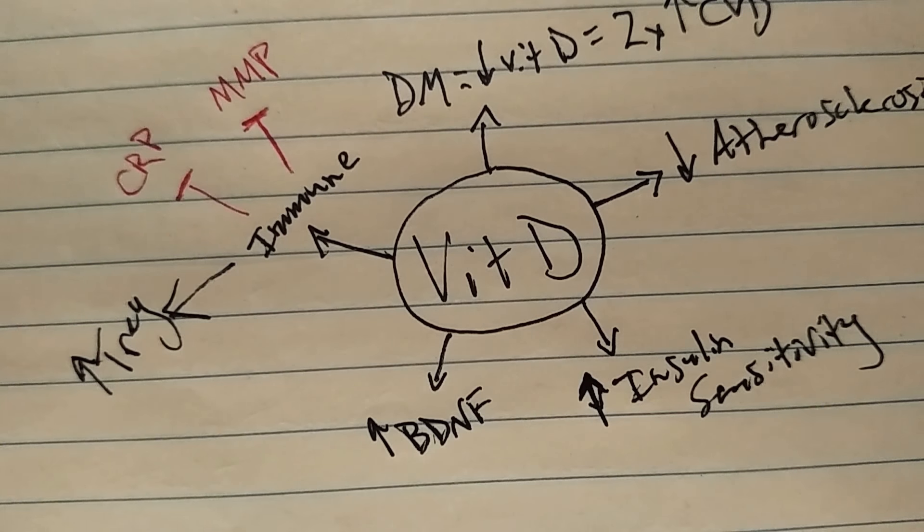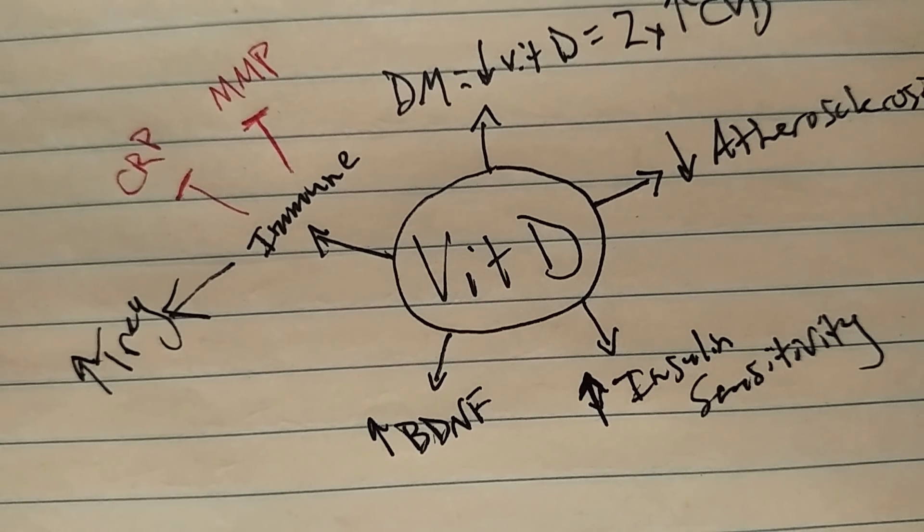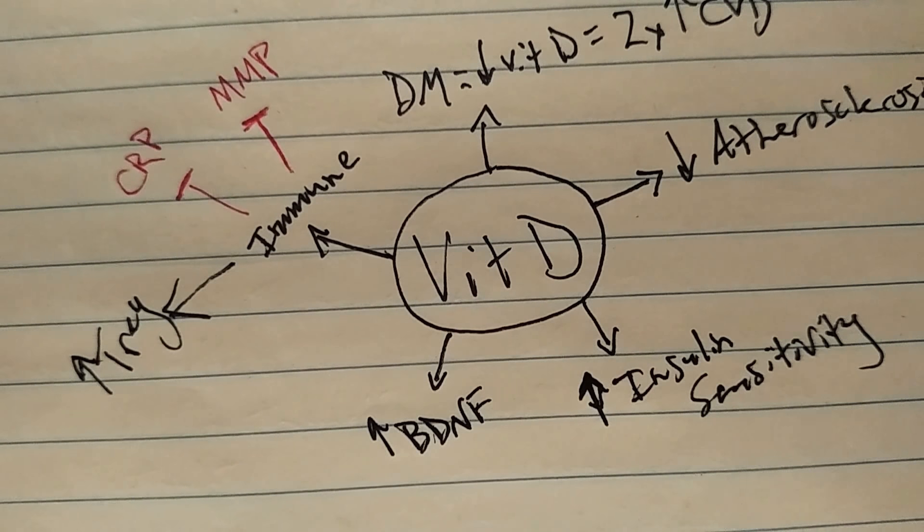So if you have chronic inflammation, if you have diabetes, if you have neurocognitive issues, if you have immune dysfunctions, vitamin D is one of the key nutrients that you want to make sure is sufficient.